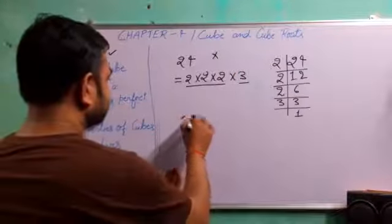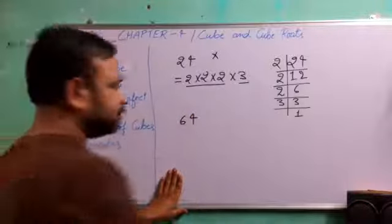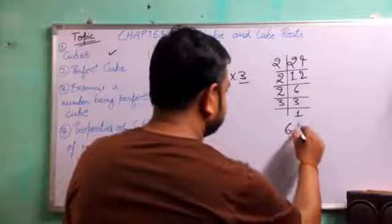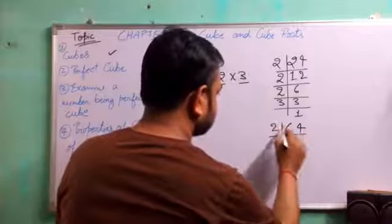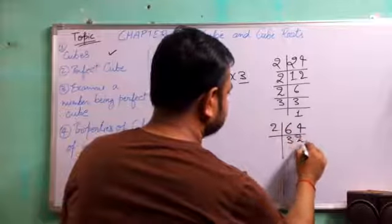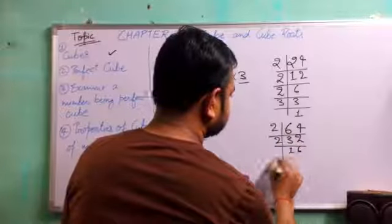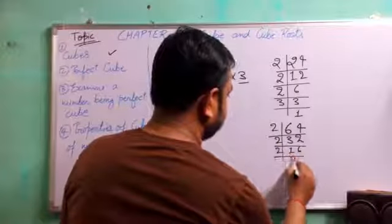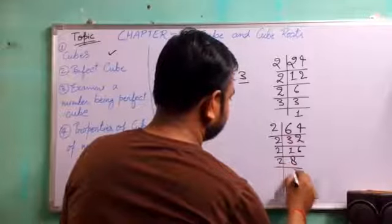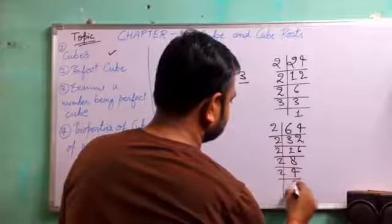Let's identify another number, that is 64. Do the prime factorization of 64: 2, 32; 2 again, that's 16; 2 again, 8; 2 again, 4; 2, 2.